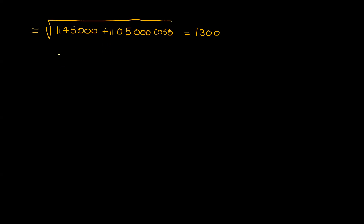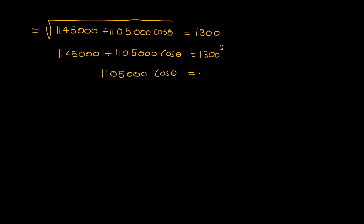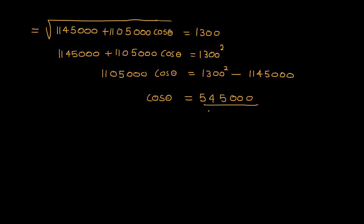So that is 1145000 plus 1105000 cosθ equals 1300 squared. Therefore 1105000 cosθ equals 1300² minus 1145000. That is equal to 545000 divided by 1105000, which equals 0.4932.